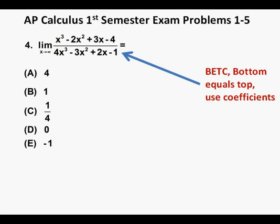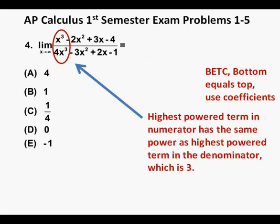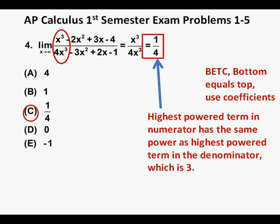We say bottom equals top because the highest powered term in the numerator x cubed has the same power as the highest powered term in the denominator which is 4x cubed. So that's 1x cubed over 4x cubed which equals 1 fourth. So we box in 1 fourth and we circle our correct multiple choice answer answer c.